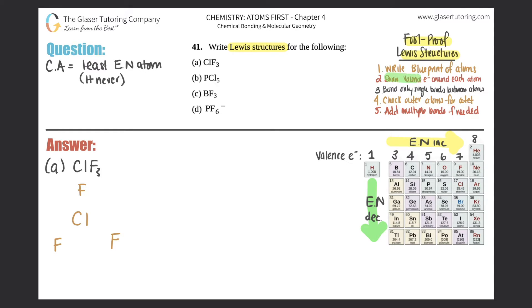Now we draw the valence electrons around each atom. Groups 13 through 18 have 3, 4, 5, 6, 7, and 8 valence electrons respectively. Chlorine and fluorine each have seven, so I'll draw seven dots around chlorine — one two three four five six seven — and seven around each fluorine.